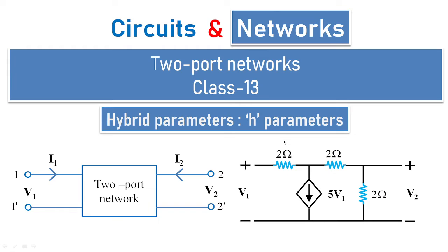In the two-port network classes, we have dealt with different numericals and examples where we found the impedance parameters (Z parameters), the admittance parameters (Y parameters), and the transmission ABCD parameters — including numericals involving dependent sources. In this particular class, we are going to see a voltage-dependent current source and find out the H parameters for the given circuit.